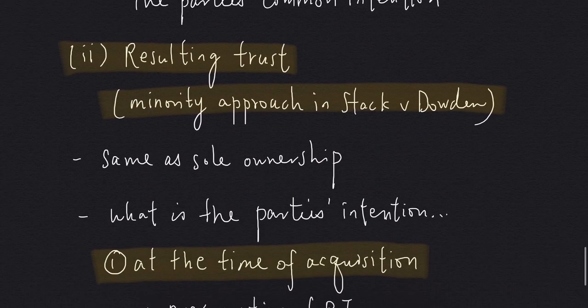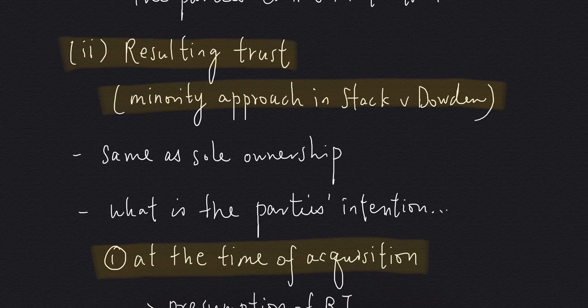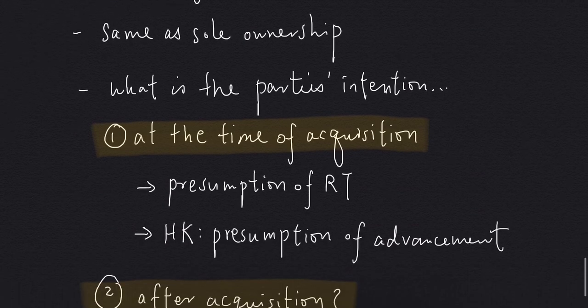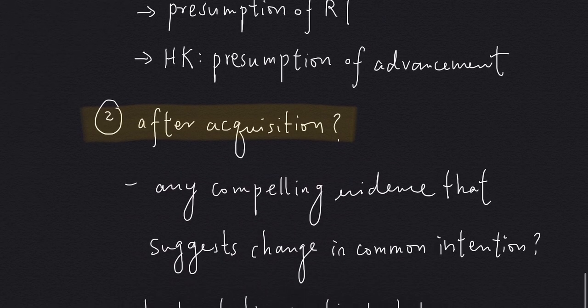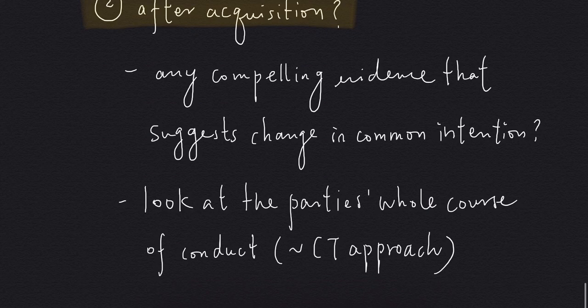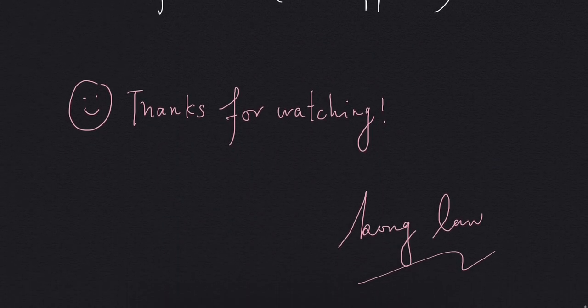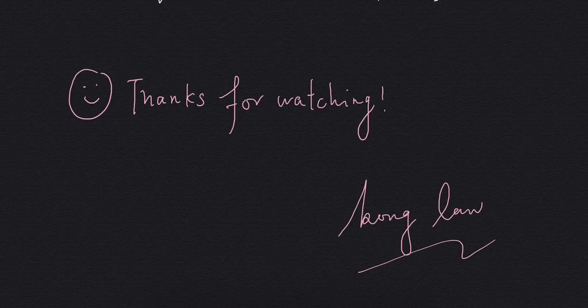For the second approach — the resulting trust approach — it is basically the same as how it is applied in the sole ownership context. There are two questions. The first question is what is the parties' intention at the time of acquisition, when the presumption of resulting trust, and for Hong Kong the presumption of advancement, may arise. The second question is whether the parties' common intention has changed after acquisition, so we look for compelling evidence suggesting a change and examine their whole course of conduct. So this is all we need to know about common intention constructive trust and resulting trust. Thanks for watching!